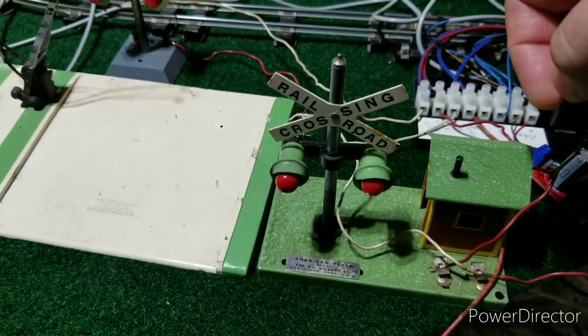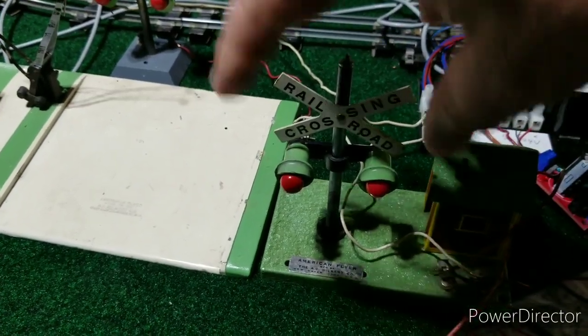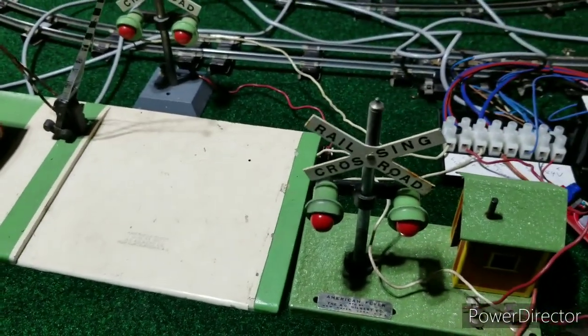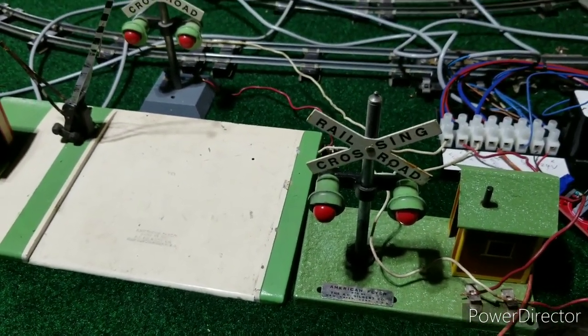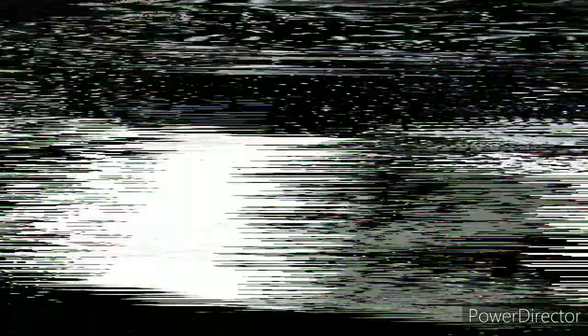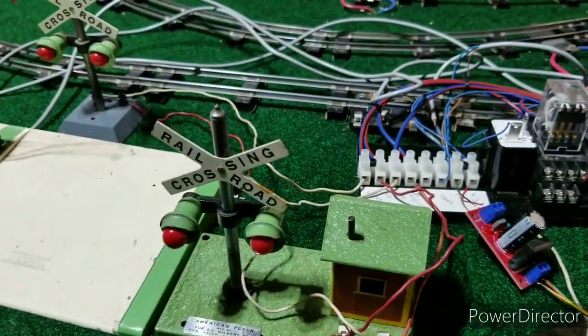So when we run this in a little bit, you'll see that these flash and those flash. And I know that's not quite prototypical, but it's Flyer and it's cool, so I'm going to leave it. This is all fine and good, but how do we trigger all of this?